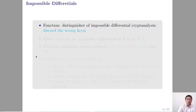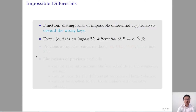Impossible differential is the distinguisher of impossible differential cryptanalysis, which is used to discard the wrong key to recover the right key. Usually, a pair of input and output difference alpha-beta is called an impossible differential of a function f. It means that, according to the propagation of difference, the input difference alpha cannot propagate to the output difference beta through f.